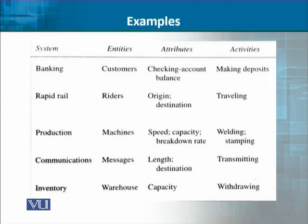If we talk about rapid transit — trains and rapid rails — and our system of interest is the rapid rail system, then our entities of interest are riders, the people sitting in it. Attributes can be origin and destination. The activity will be traveling — the duration of sitting on the train. The events will be boarding the train, leaving the train, or disembarking from the train.